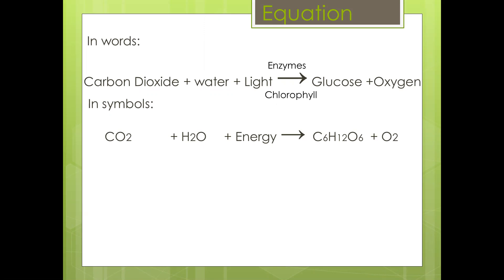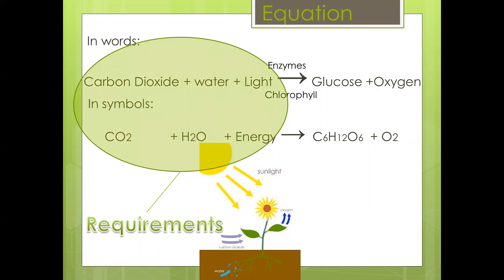That's the site of photosynthesis, the chloroplast, and the chlorophyll will be used to trap the light energy. We find that all of the substances on the left-hand side of the equation are known as the requirements, what are required for the process.